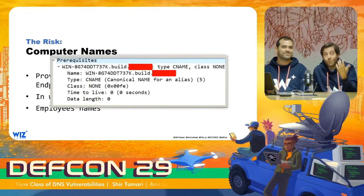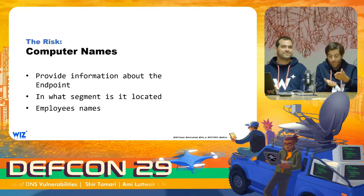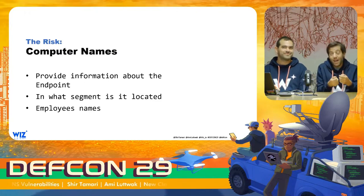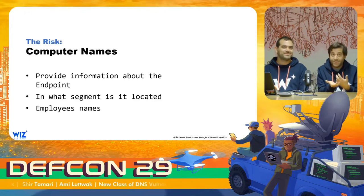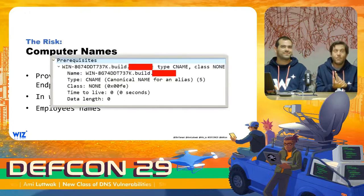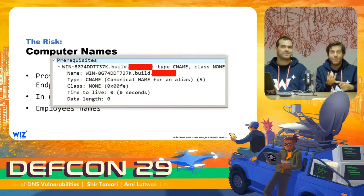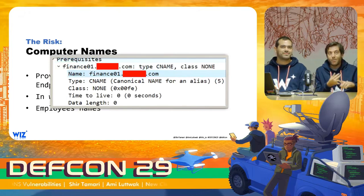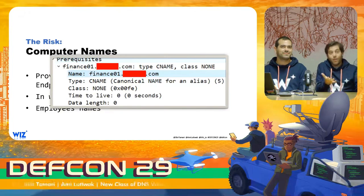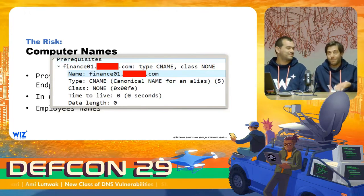We also had computer names, and computer names actually hold information about the endpoint. Many times you get employee names. You understand the actual role of the machine. You can see the specific build the machine is using. So we are actually getting quite a lot of information about those companies based on the IPs and the computer names. For example, here we see this is finance, and we see all of those machines are part of a specific segment — so I'm starting to build my internal map of this company.